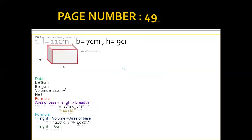Question 8: two parts are given. In the first part, height is unknown; in the second part, breadth is unknown. Volume, length, and breadth are given in part A. It is necessary that you first write the data, then write the formula, then do the solution. Part A: volume is 240 cm³, length is 8 cm, and breadth is 5 cm. Height is unknown.